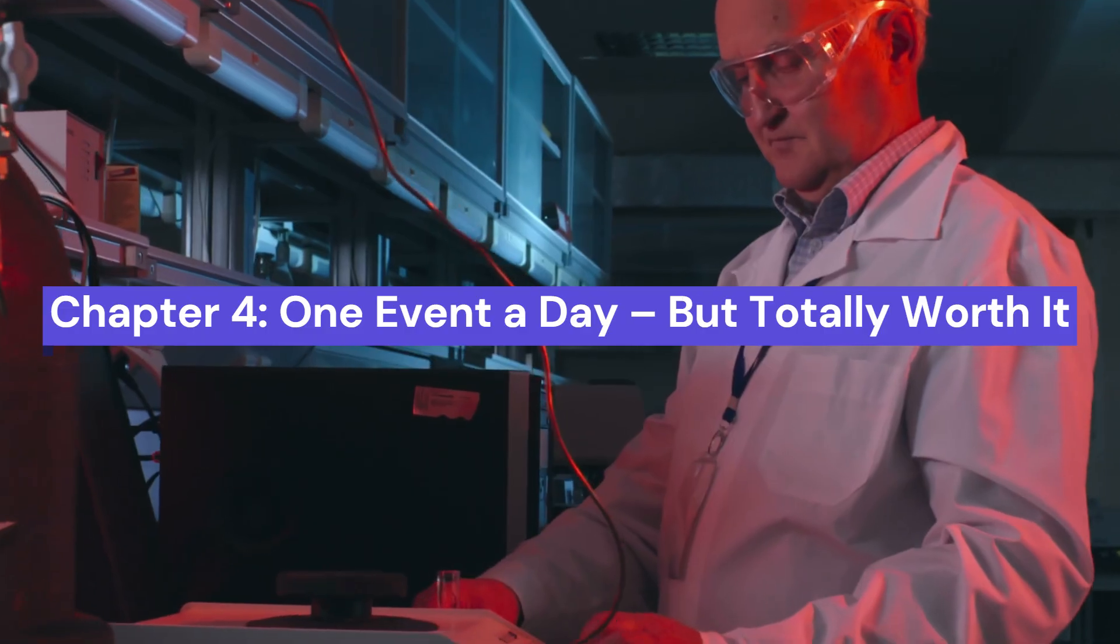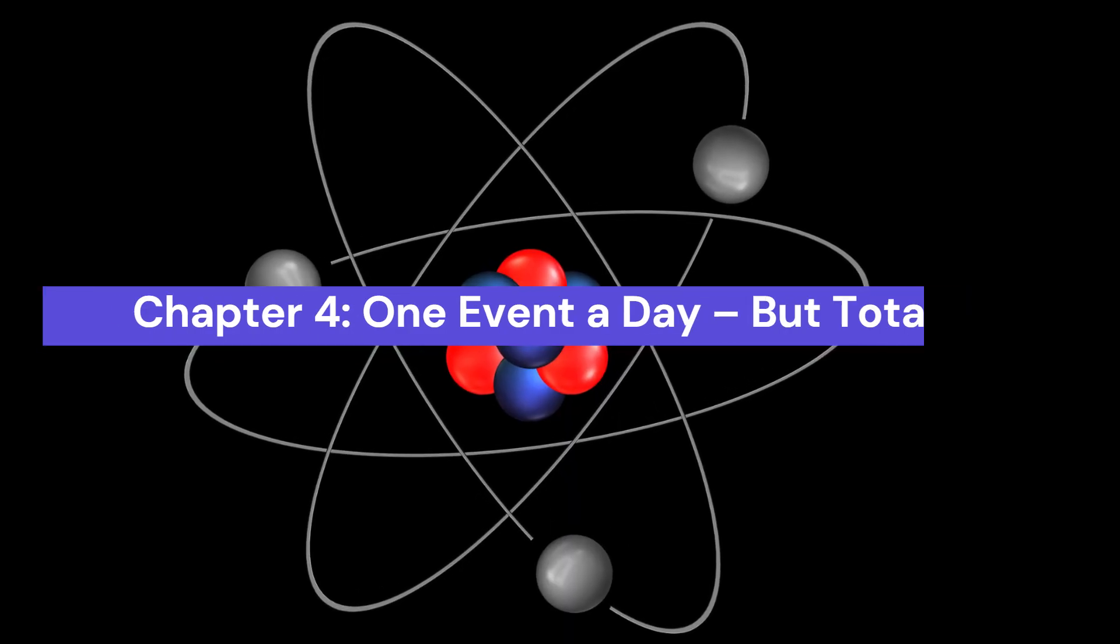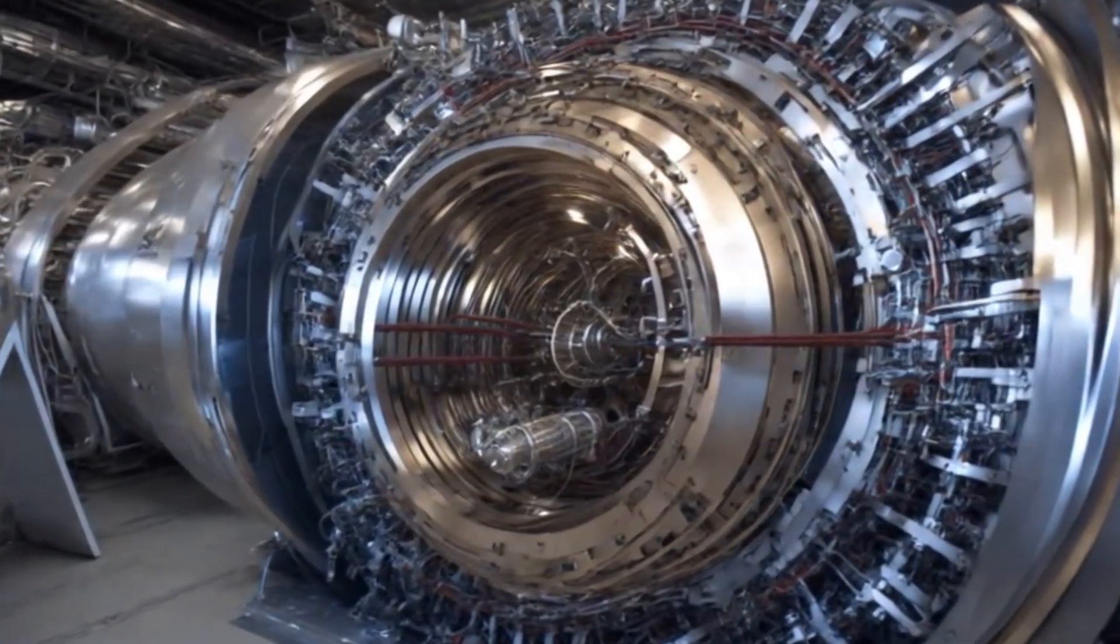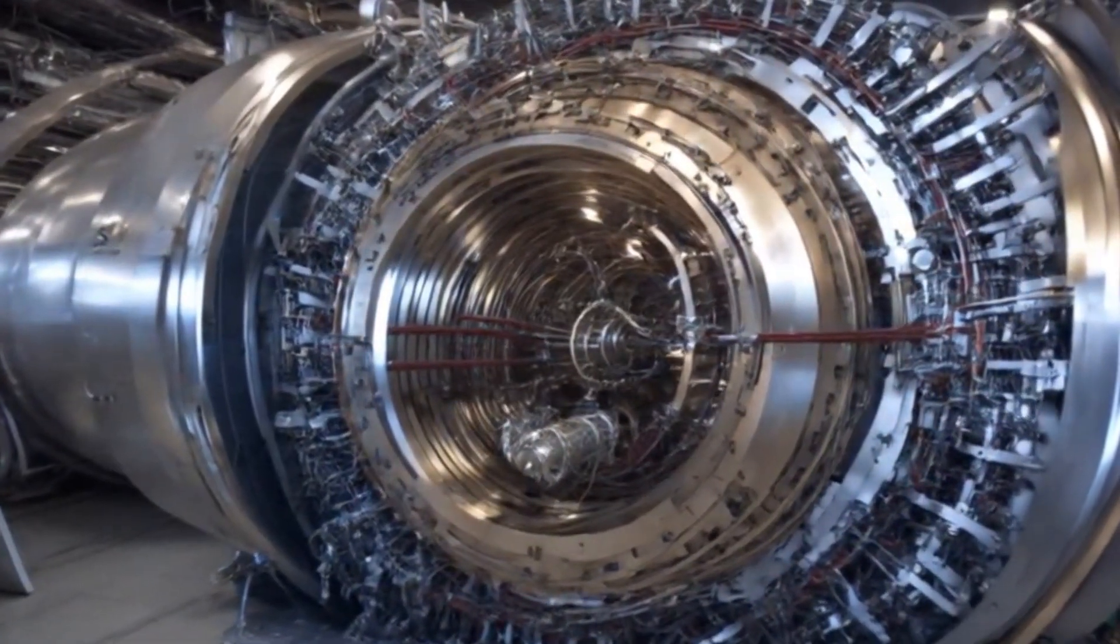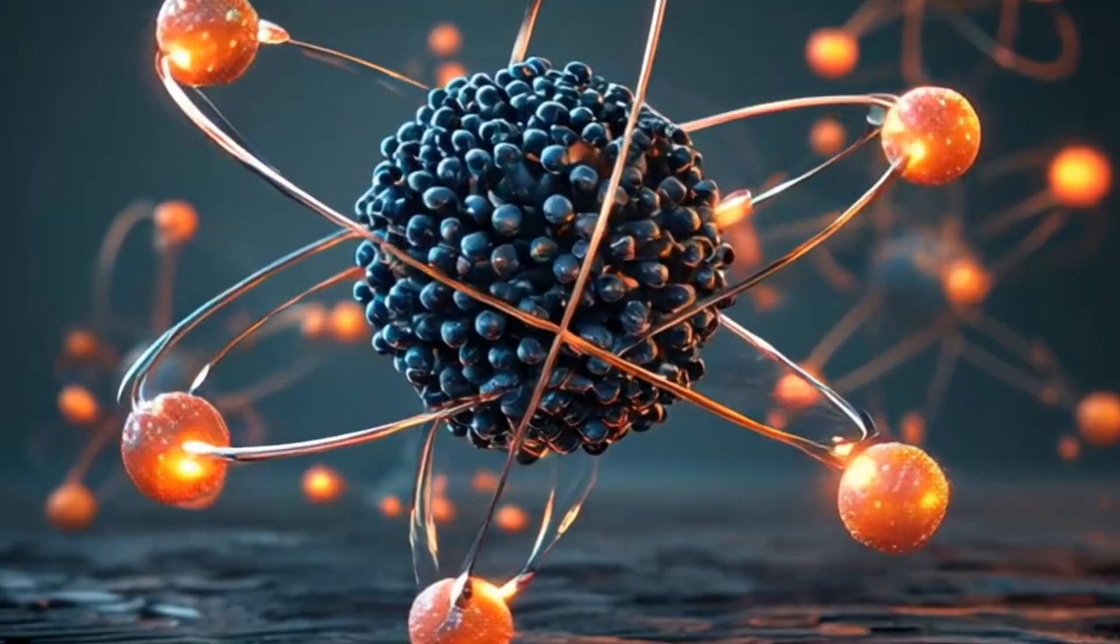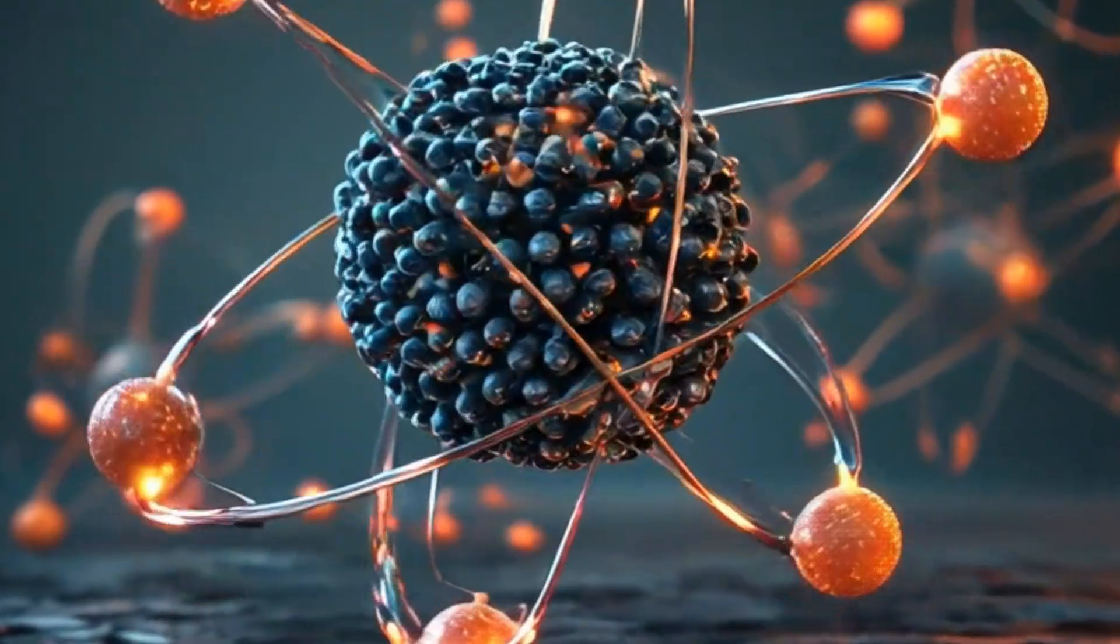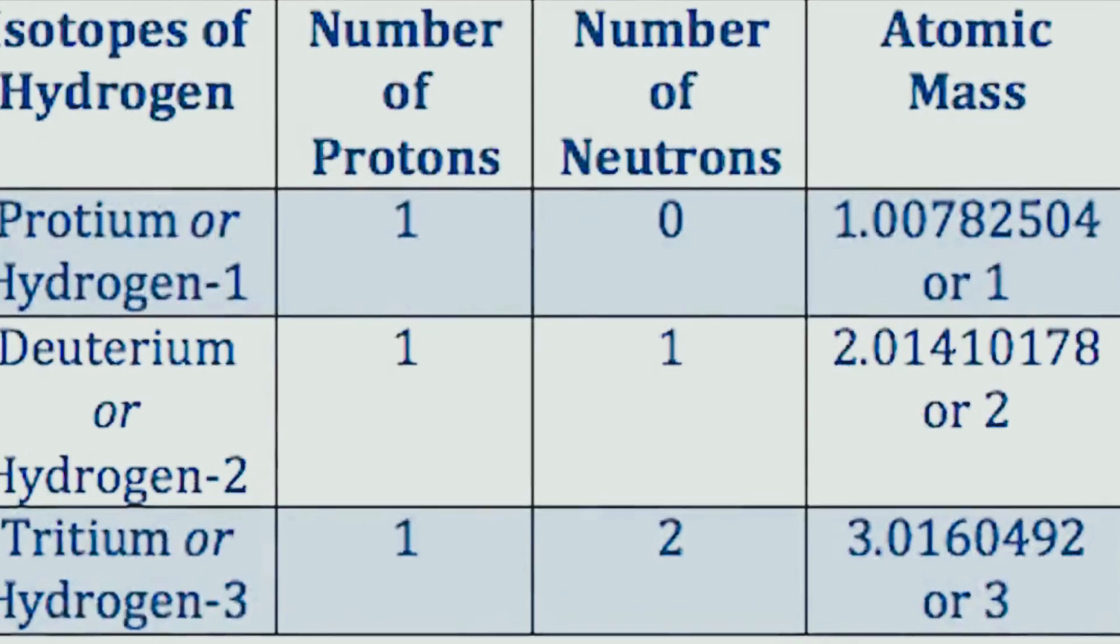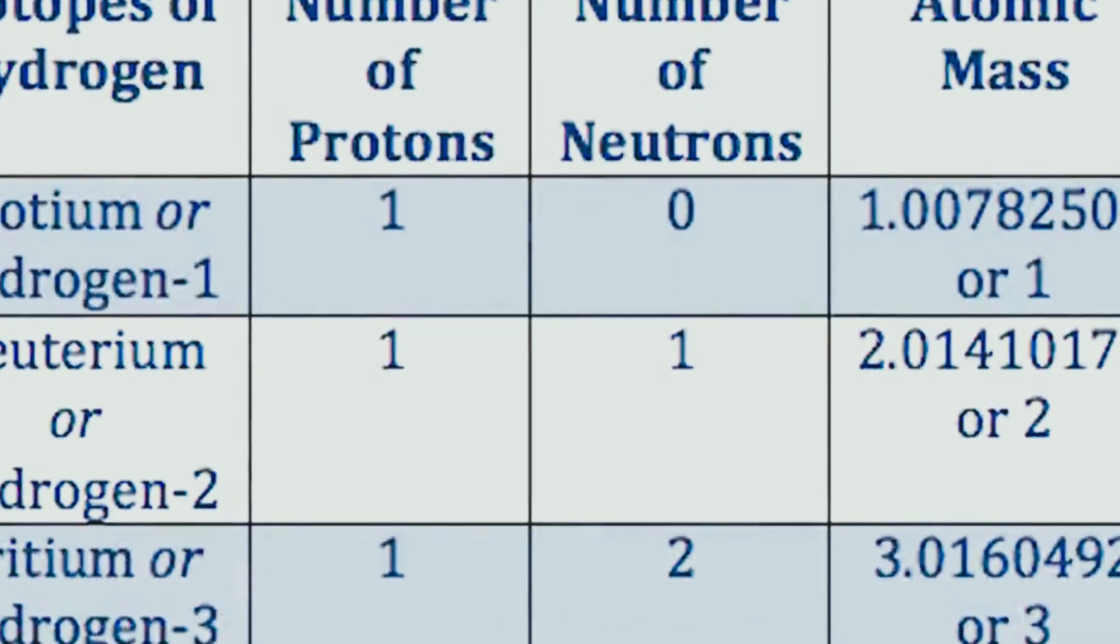After setting everything up, the scientists ran the experiment for four straight weeks. That might sound like a long time, until you realize they were only seeing about one valid event per day. In total, they observed just a handful of hydrogen-6 creation events. But that was all they needed. Because what they saw was clear and unmistakable.